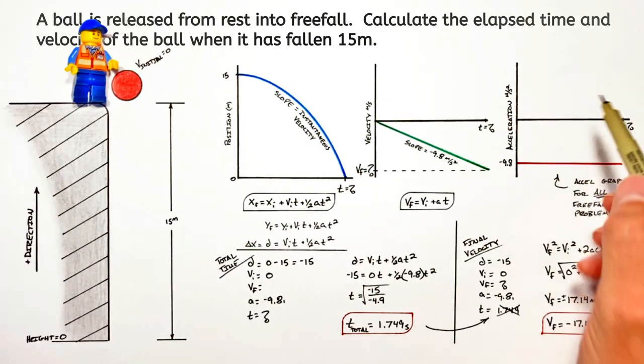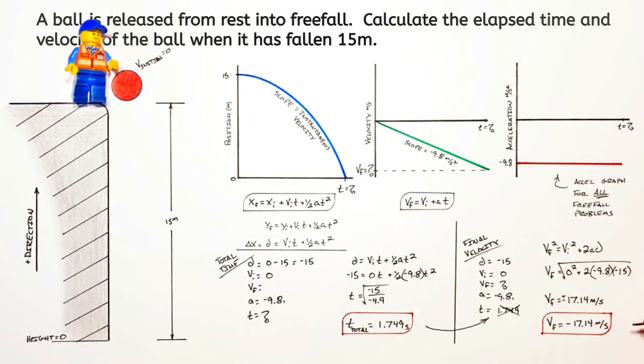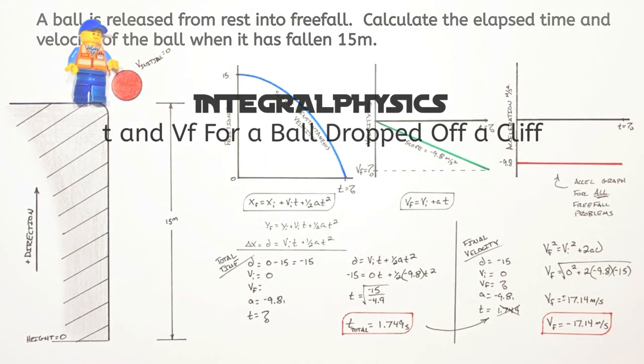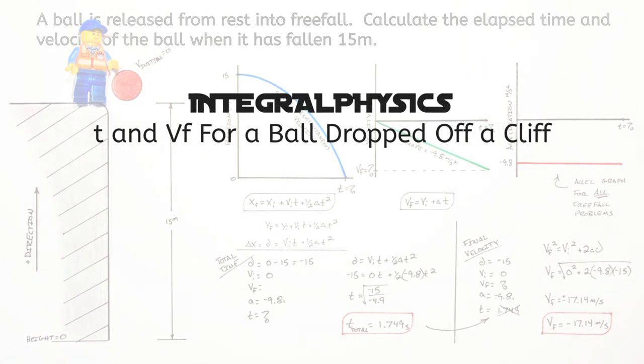So this is how you graph the motion of an object in free fall, as well as solve for the total time and final velocity of an object as it falls off a cliff. And on that note, that's all for now.